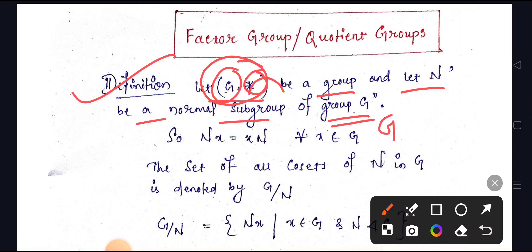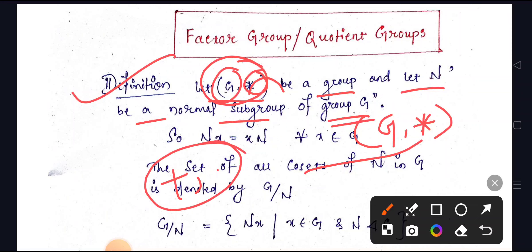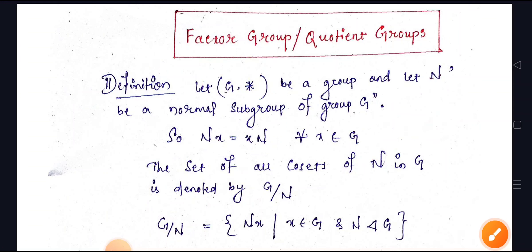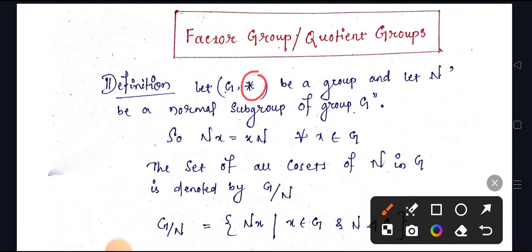We write a complete group G*, where * defines the algebraic operation — that is, addition and scalar multiplication. So let G* be a group and N be a normal subgroup of G.